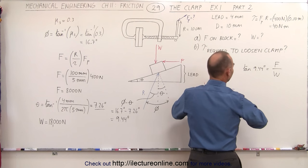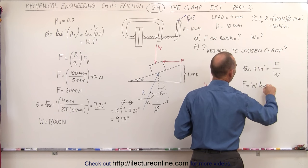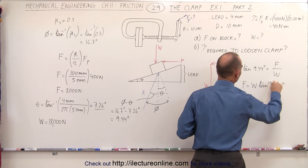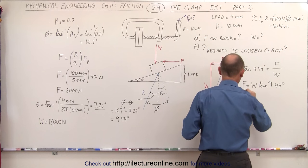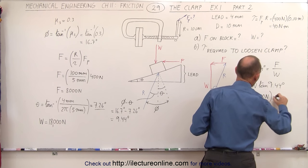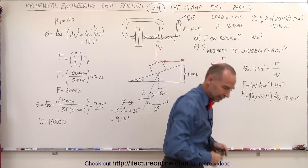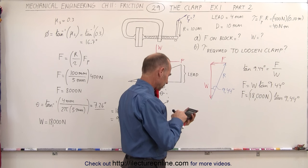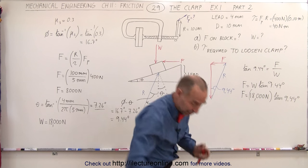So to find F, we take F equal to the weight times the tangent of 9.44 degrees. And the weight as we calculated was 18,000 newtons times the tangent of 9.44 degrees. Now we need a calculator. The tangent of that times 18,000 equals 2,993 newtons.